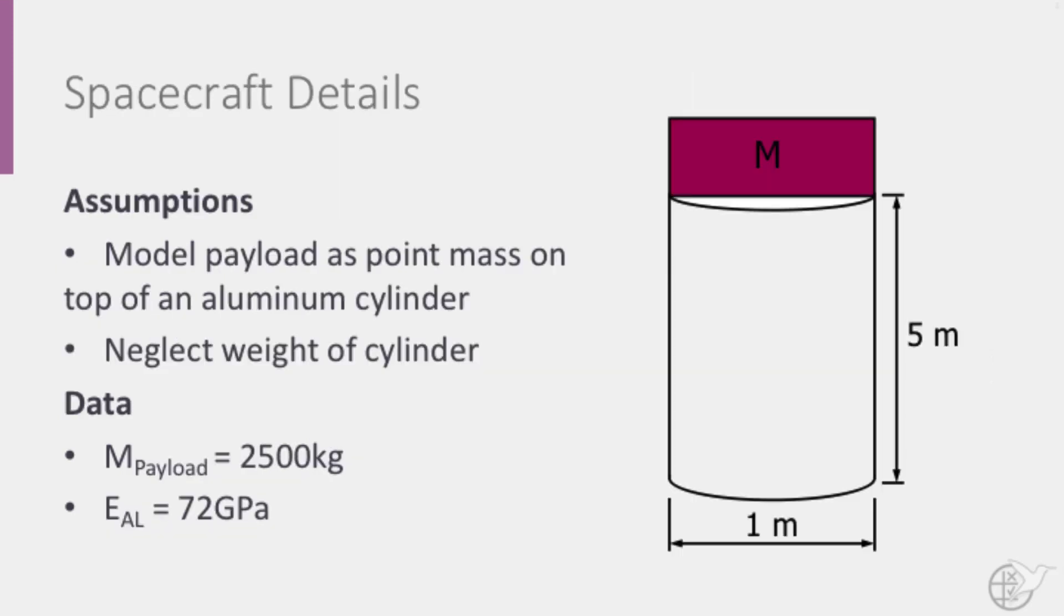Let us have a quick look at the spacecraft dimensions as well. We may assume that we can model the payload as a point mass on top of an aluminum cylinder and that the weight of this cylinder may be neglected compared to the mass of the payload. The mass of the spacecraft is equal to 2500 kg and has a height L equal to 5 m and a diameter of 1 m. The modulus of elasticity for the aluminum used is 72 GPa.